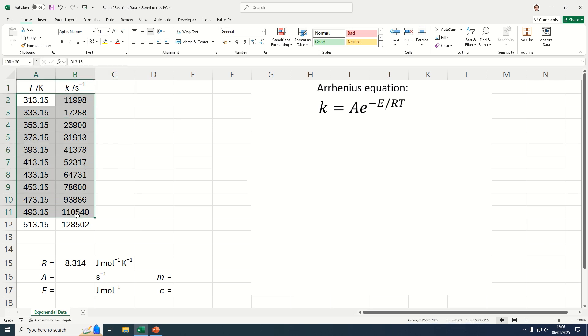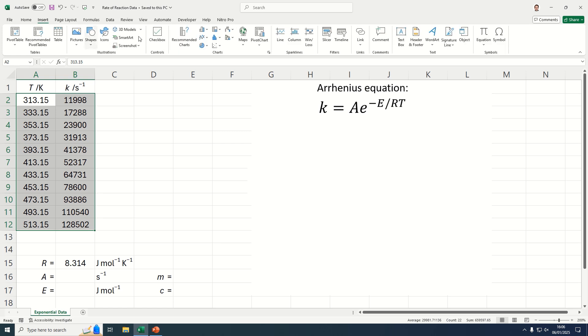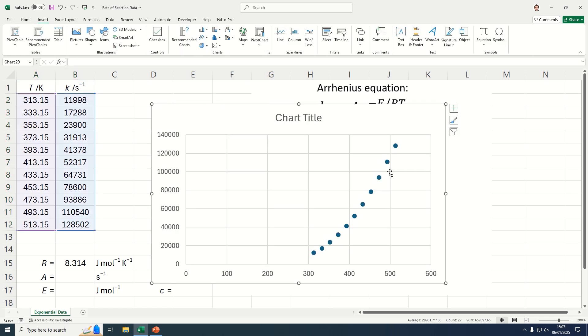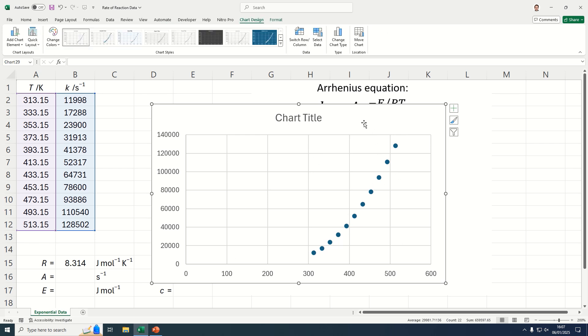If we highlight that data and insert a scatter graph, we can see that we get this interesting shape here, and we actually need to do some processing to this data in order to get it to be linear.